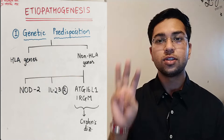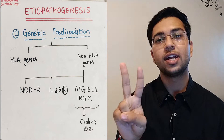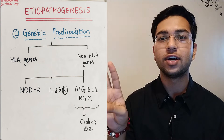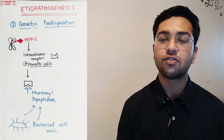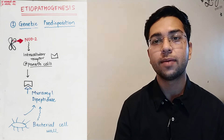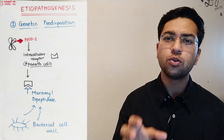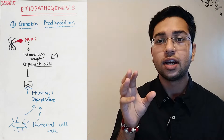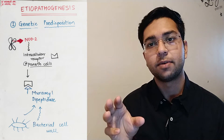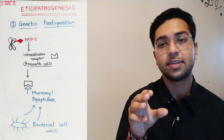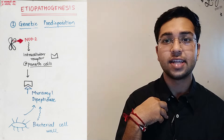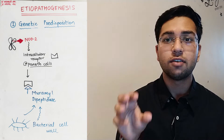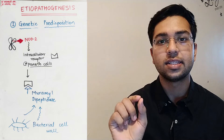Coming to non-HLA genes, they include three things: first is NOD2, second is interleukin-23 receptor, and third is ATG-16L1 and IRGM. NOD2 — NOD stands for nucleotide oligomerization binding domain 2 — is a gene which codes for an intracellular receptor. This intracellular receptor is present in the Paneth cell. In the intestine, we have one special type of cell known as the Paneth cell.